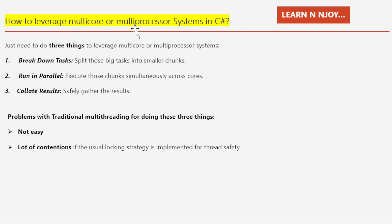How to leverage multi-core or multi-processor systems in C#? Now the exciting part — leveraging this power in C#. It is as simple as 1, 2, 3. We have three things in order to leverage multi-core or multi-processors. Number one, breakdown tasks — split those big tasks into smaller chunks. Number two, run in parallel — execute those chunks simultaneously across cores. Number three, collate results — safely gather the results. These three things allow us to leverage the power of multi-core or multi-processor systems.